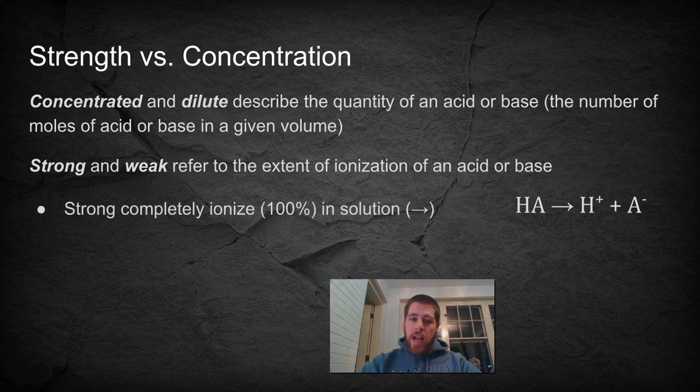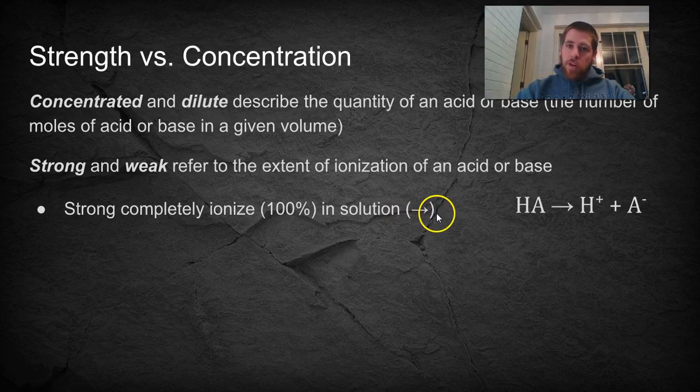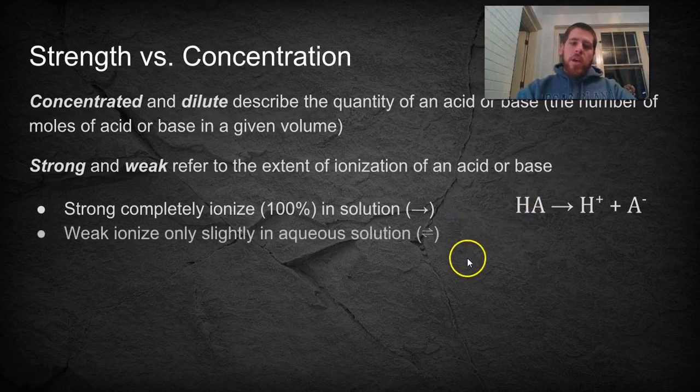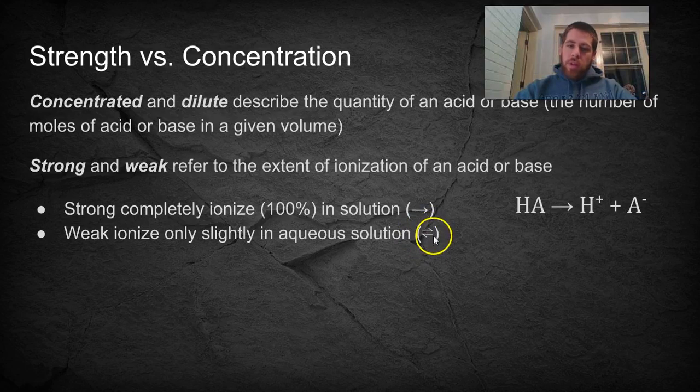So strong acids ionize completely. So we often show them with just a one directional arrow. They're 100% ions, there's virtually no HA left in solution. With weak acids or weak bases, they ionize somewhat. And that's dependent on an equilibrium expression. So we show this with an equilibrium arrow, double arrow. So you have both HA and the ions in solution.